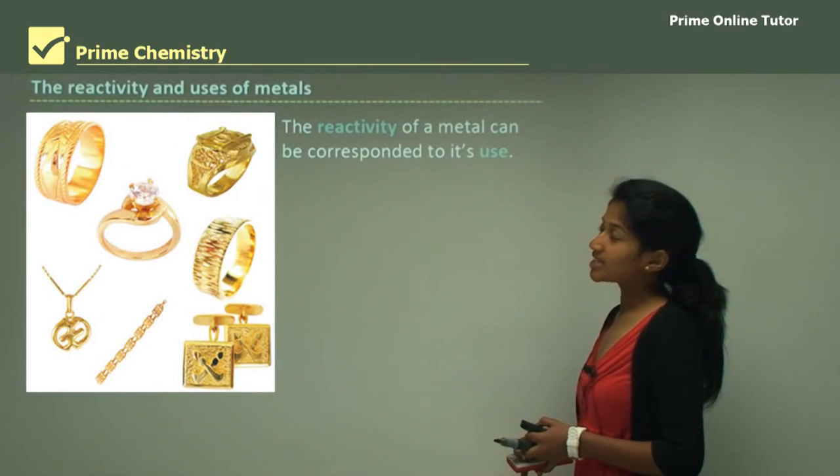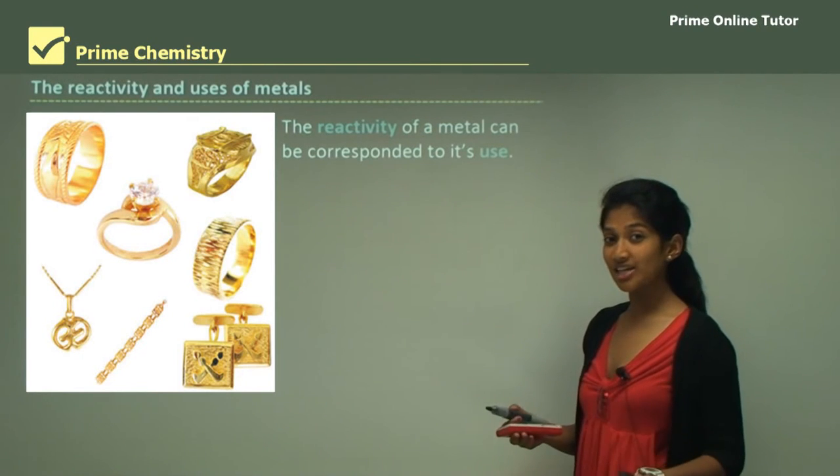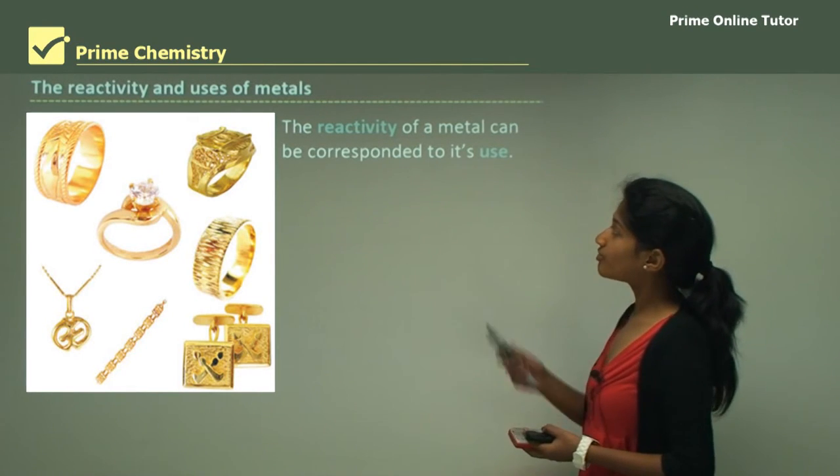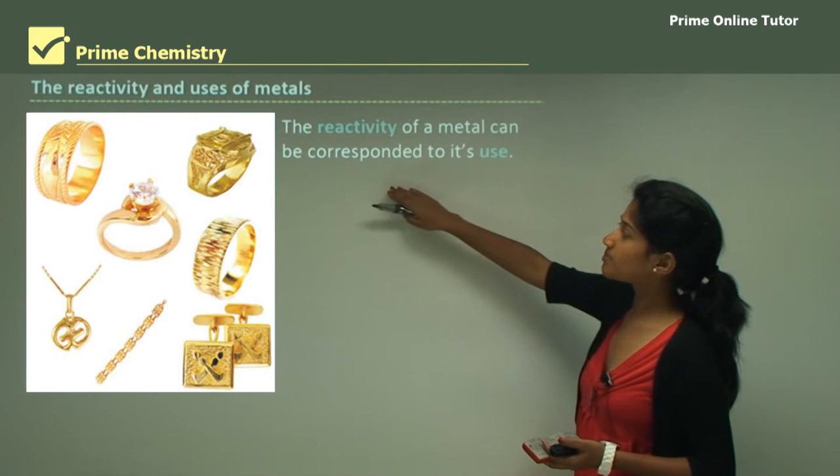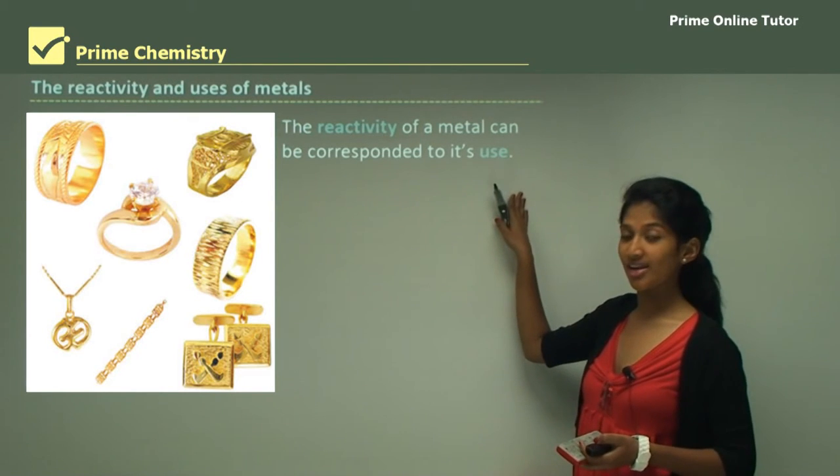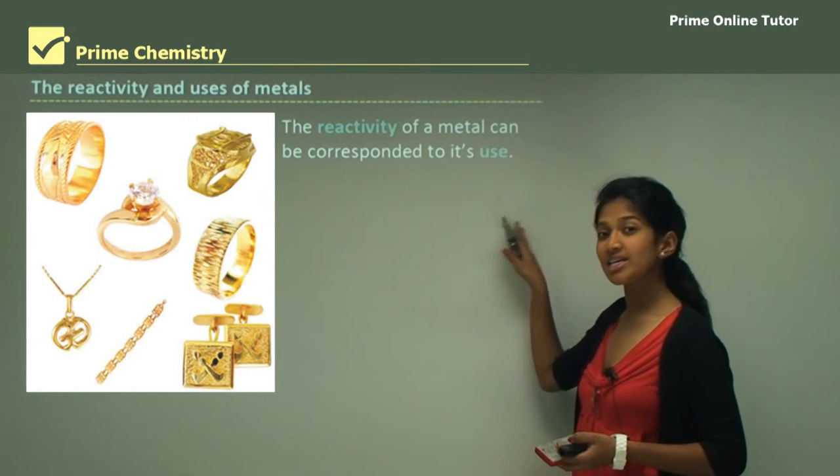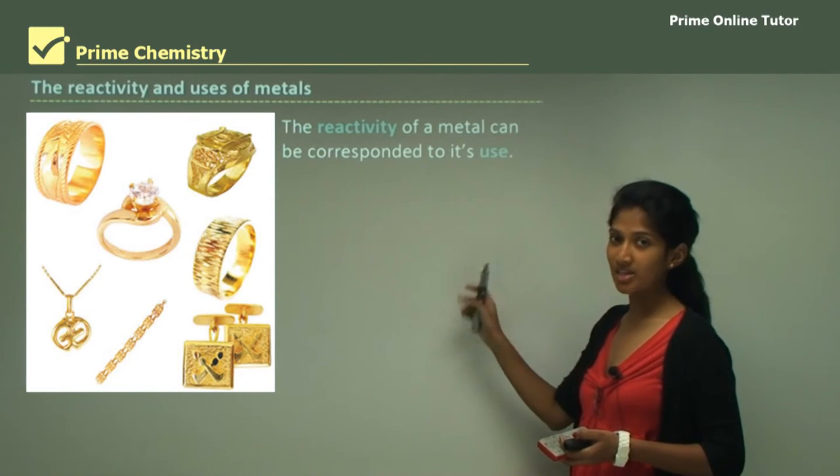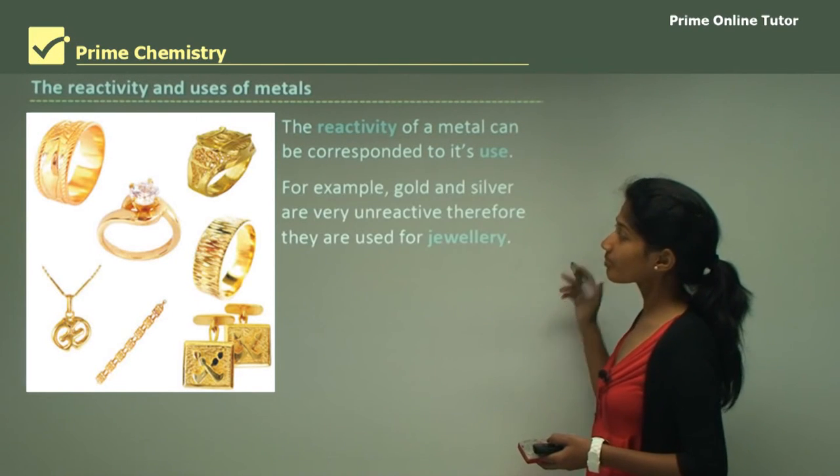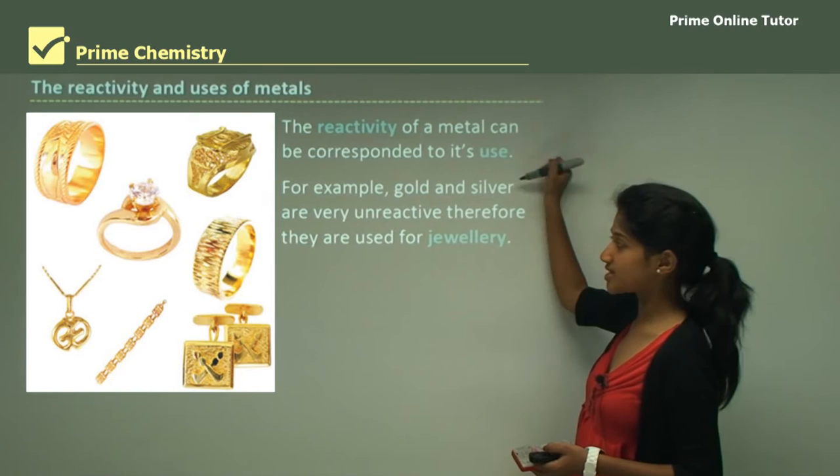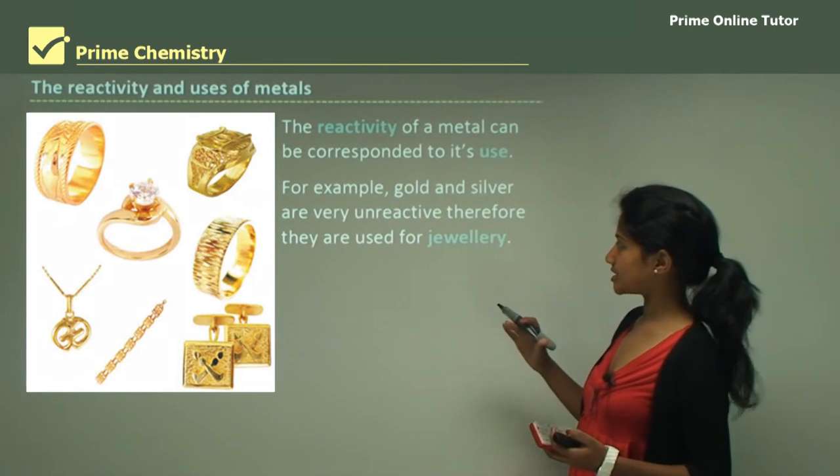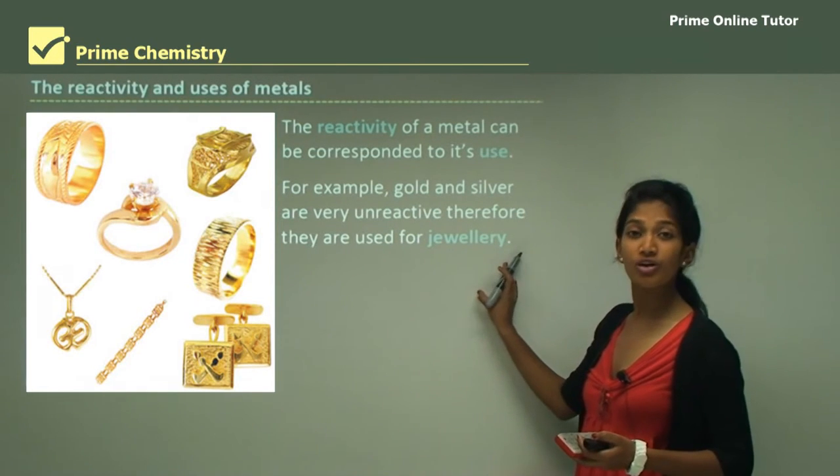The reactivity and the uses of metals. Now we're going to relate our reactivity and uses. The reactivity of a metal can be corresponded to its use. In other words, its use is dependent on its reactivity. For example, we have gold and silver being very unreactive, therefore they are used for jewelry.